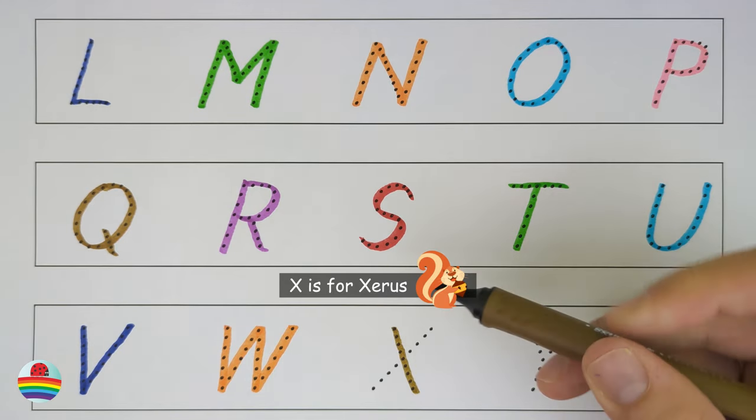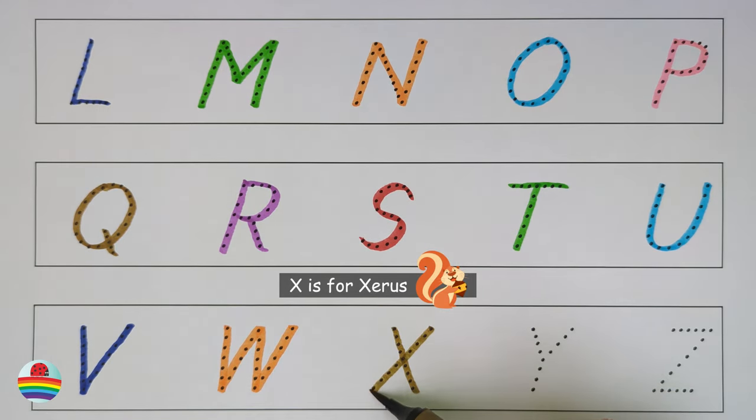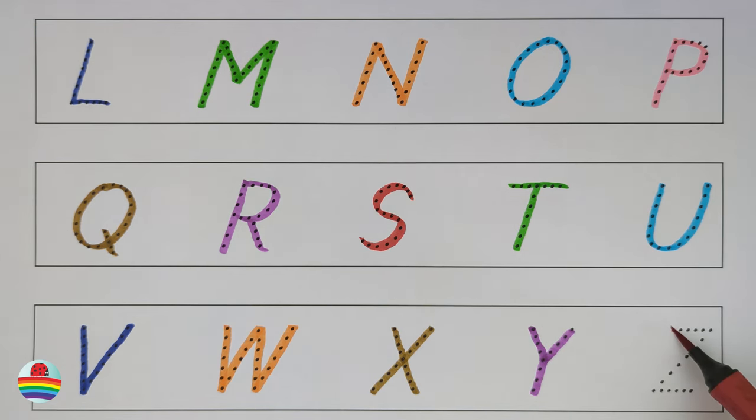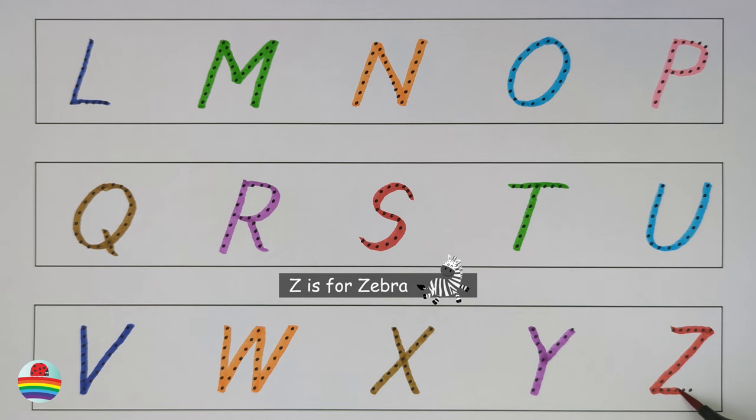X. X is for Xerus. X. Y. Y is for Yak. Y. Z. Z is for Zebra. Z.